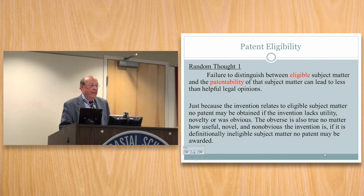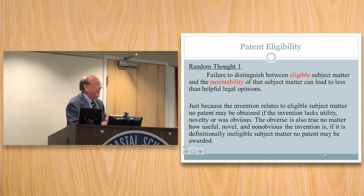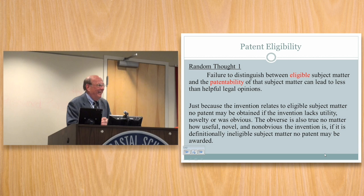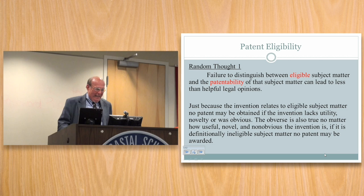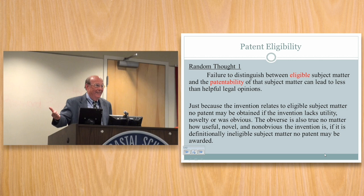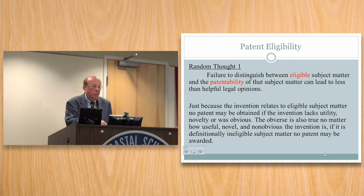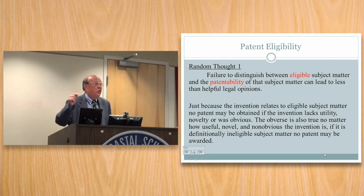Random thought number one: the failure to distinguish between eligibility of subject matter and the patentability of that subject matter can lead to less than helpful legal opinions. This case is the poster child for confusing eligibility and patentability. Just because an invention relates to eligible subject matter gets you into the door of the PTO. But no patent may be obtained if that invention lacked utility, lacked novelty, or was obvious. The opposite is also true: no matter how useful, novel, or non-obvious the invention is, you still don't get a patent if it's definitionally not subject matter — it's been ruled off the list.